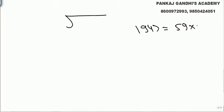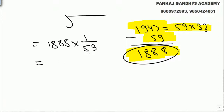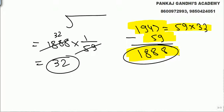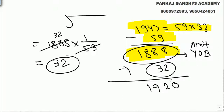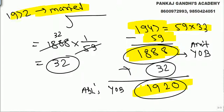1947 is the 33rd multiple of 59. Before that, the previous multiple of 59 would be 1947 minus 59, which is 1888. If Amitabh's year of birth is 1888, his age when Abhishek is born would be 32. So Abhishek's year of birth would come out to 1920 — but the problem is Amitabh is getting married in 1972, so his son has to be born after 1972. Here, the son is born before the marriage, so this is not possible.